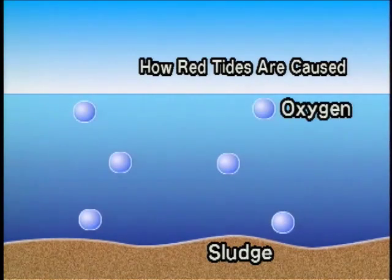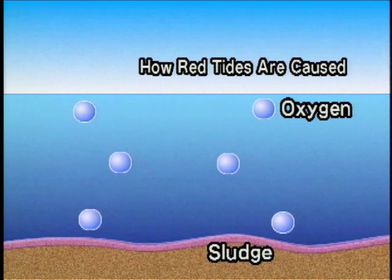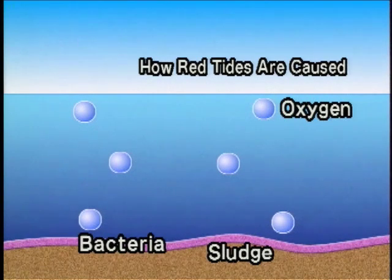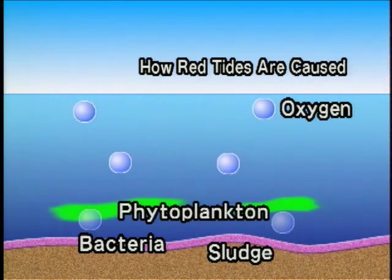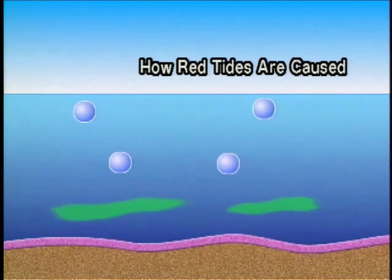Layers of organic sediment sink to the bottom. They are decomposed by bacteria, which consume oxygen in the water. The turbid water cuts sunshine and prevents oxygen-producing photosynthesis in plankton.